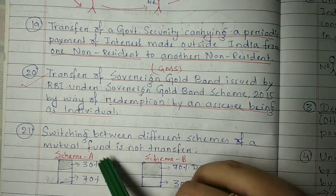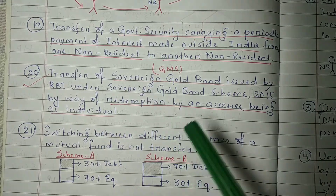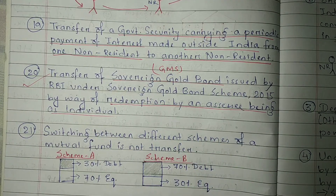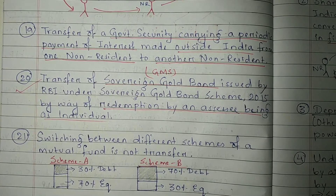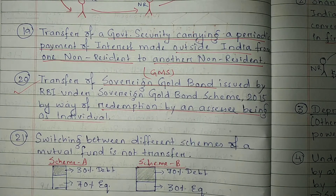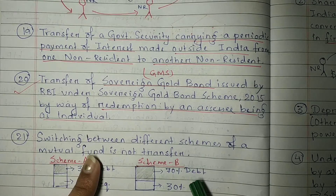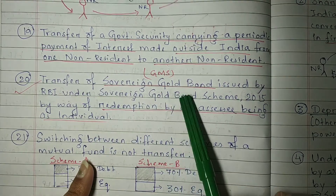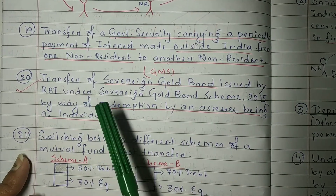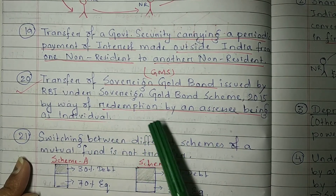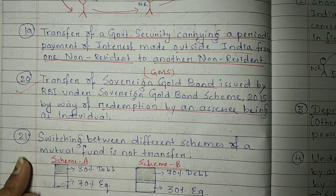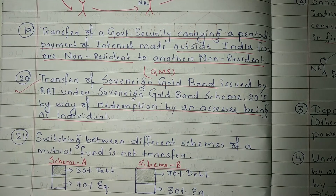Next is point number 20. This is the transfer of sovereign gold bonds. If you are investing in sovereign gold bonds and you redeem them, you don't need to pay capital gain tax. Specifically, the transfer of sovereign gold bonds issued by the RBI under the Sovereign Gold Bond Scheme 2015, by way of redemption by an individual — in this case you do not need to pay capital gain tax.